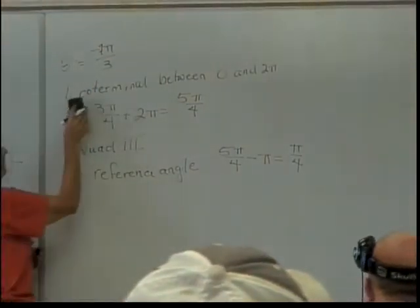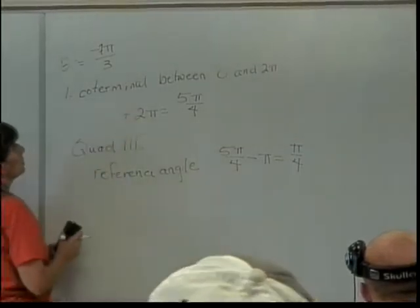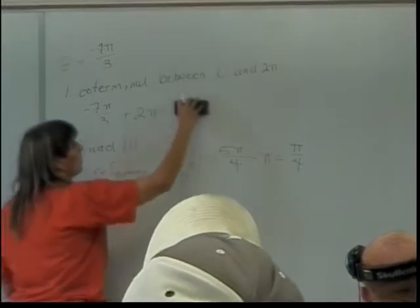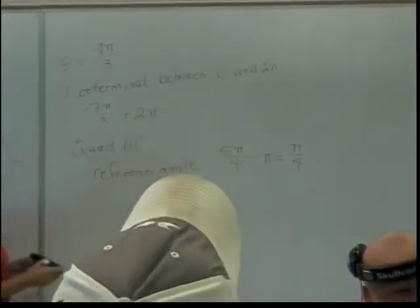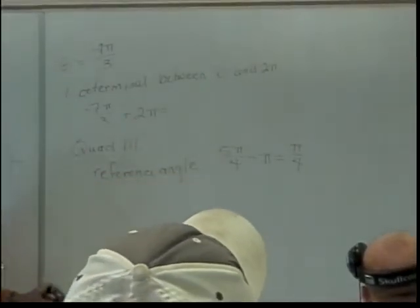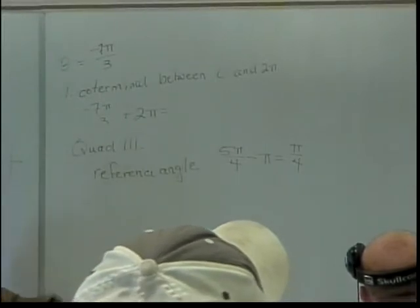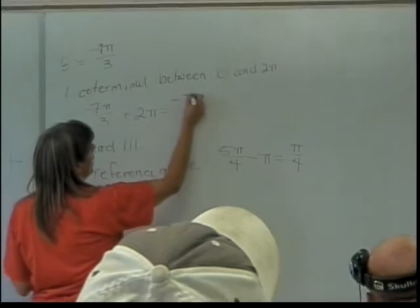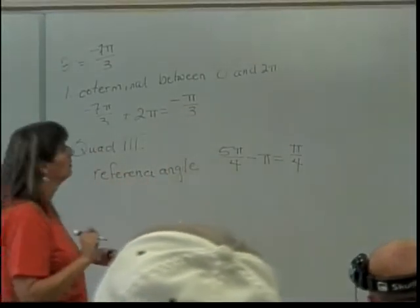I need to start by finding an angle that is coterminal, so negative 7 pi over 3 plus 2 pi. What will that get me? Will that get me there yet? No, sure won't. That will only get me to negative pi over 3. You need to do 4. Still not there yet.